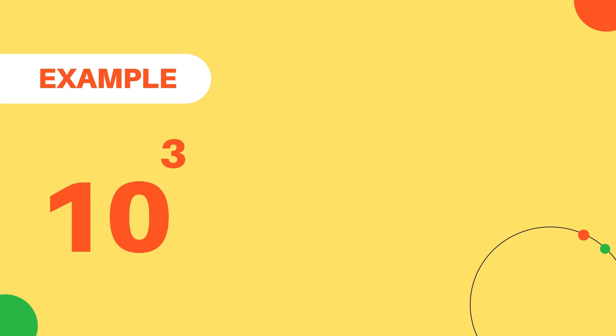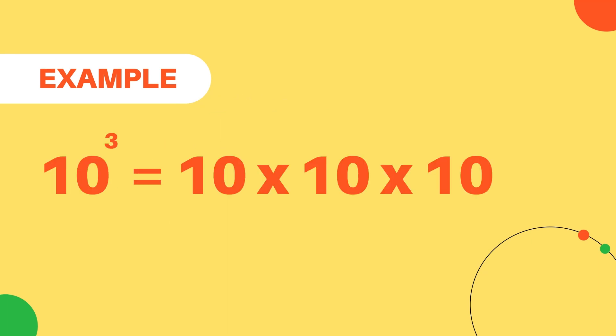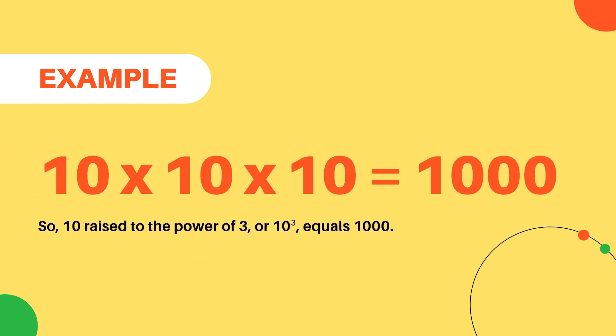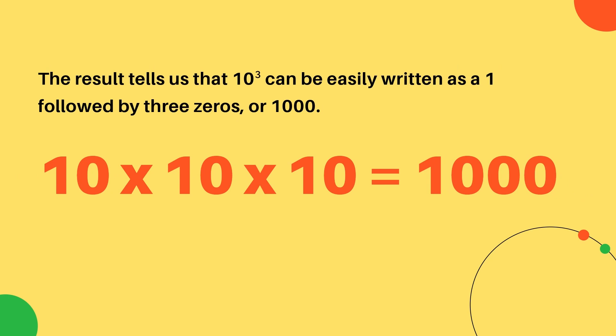10 to the power of 3. In this example, the exponent is 3. To calculate 10 to the power of 3, we multiply 10 by itself 3 times. 10 multiplied by 10 multiplied by 10 equals 1,000. So, 10 raised to the power of 3 equals 1,000. The result tells us that 10 to the power of 3 can easily be written as a 1 followed by 3 zeros, or 1,000.